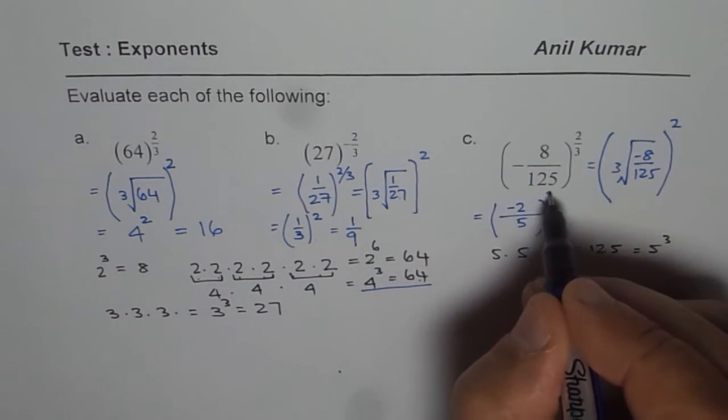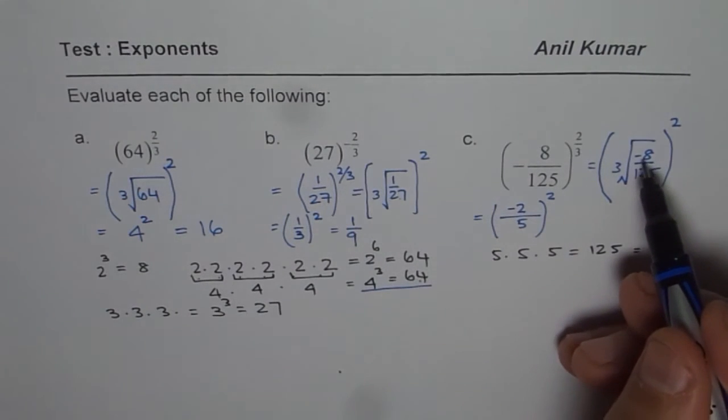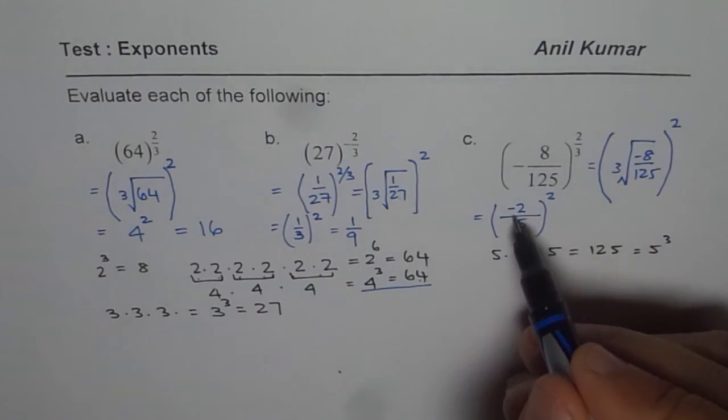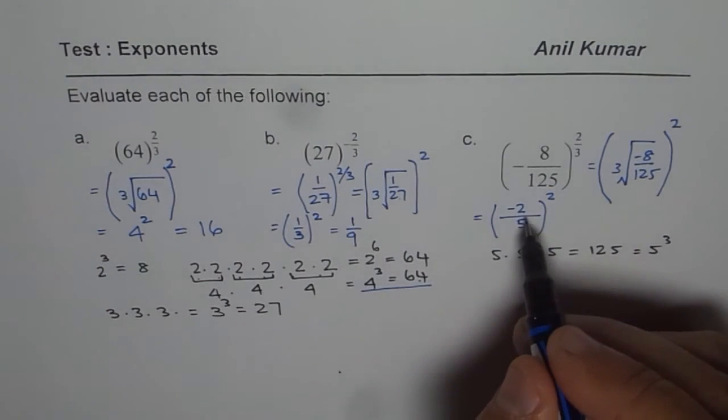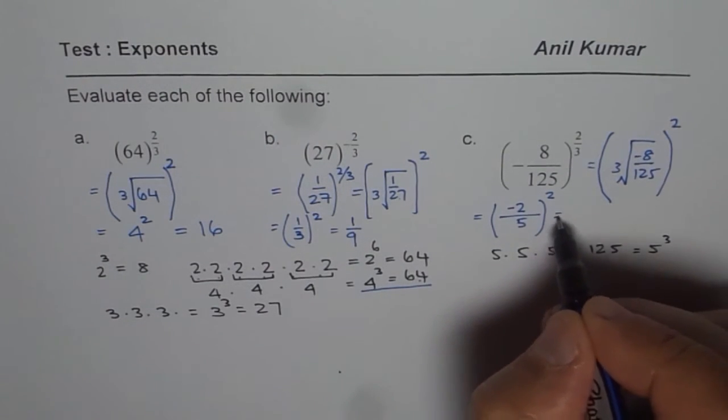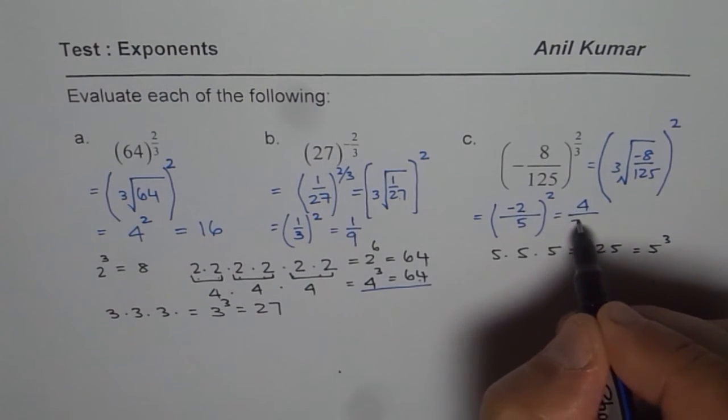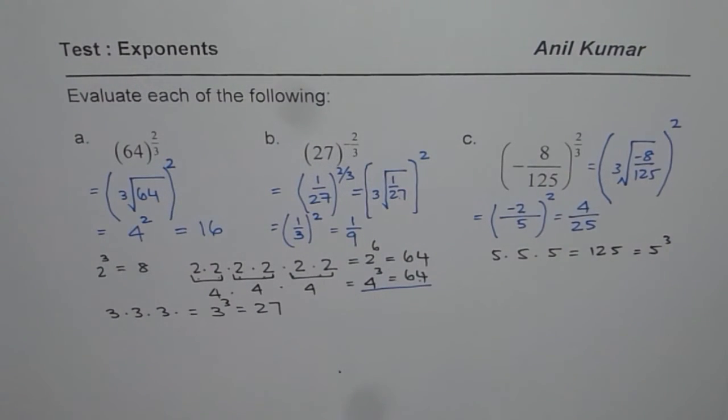Now, we have to square this number. It doesn't really matter whether you take negative with the numerator or with denominator, but at one place you have to put it. When you square, negative becomes positive. We get a positive answer. 2 squared is 4 and 5 squared is 25. That is your answer for the given question.